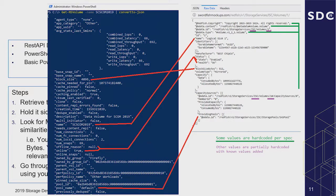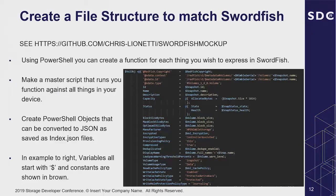Once you've done the mapping, you create a file structure to match the Swordfish spec. I've created a project — which I'm calling Project Catfish — where I'm working on getting all vendor-specific stuff out and making it generalized. Once I do, it'll be submitted to SNIA's site for inclusion as a new open-source project. It lets you run a PowerShell commandlet that queries an array, pulls all that data in, and saves it all to the hard drive locally in that file structure.